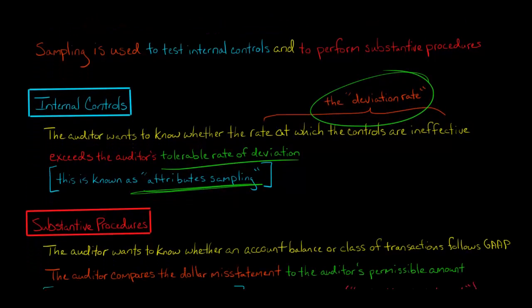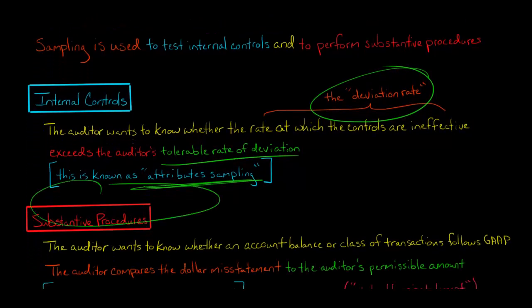When we're talking about sampling with substantive procedures, now we're taking a look at an account balance. Again, could be inventory, something like that, or a set of transactions, purchases, sales orders. And we're trying to see, does this follow GAAP? Does it follow generally accepted accounting principles? So we're going to look and maybe we count the inventory and we come up with what the value of the inventory should be.